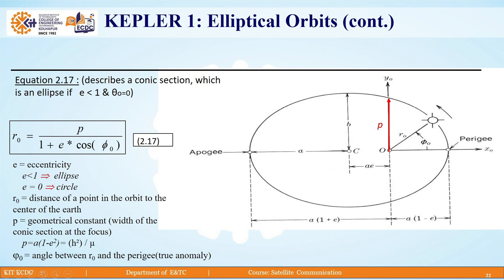r₀ is the distance of the point in the orbit to the center of the earth. P is the geometrical constant. It is the width of the conic section at the focus. We can also rewrite the equation for P in terms of A and E: P = A(1-E²), or in terms of H and μ: P = H²/μ. φ is the angle between r₀ and the perigee, which is also called true anomaly.